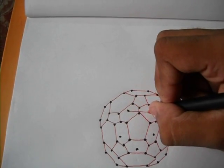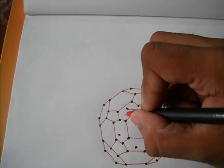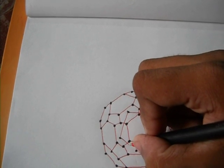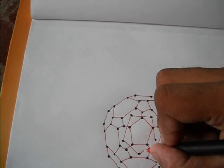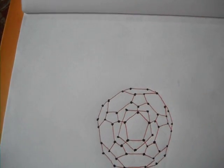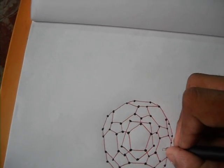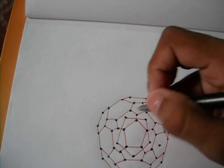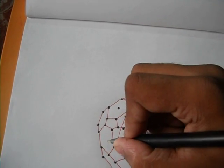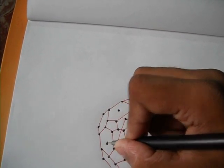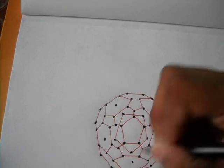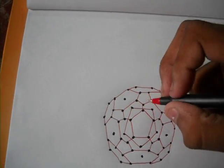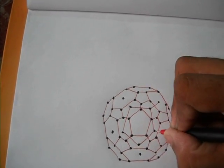Join them. We will be seeing that we will be getting a bigger pentagon surrounding our first smaller pentagon. Now, draw lines in the hexagons surrounding the vertices of the bigger pentagon and join them to the vertices of the pentagon.